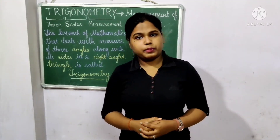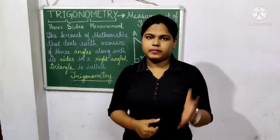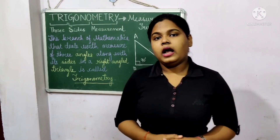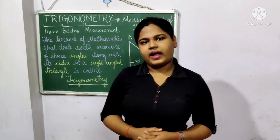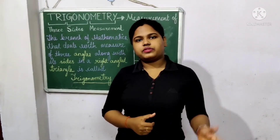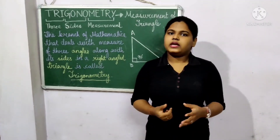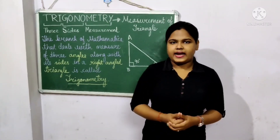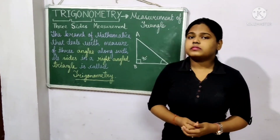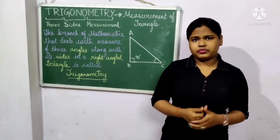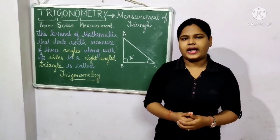So what does trigonometry basically mean? Trigonometry means measurement of triangle. The word trigonometry is divided into parts: tri means three, gono means sides, and metri means measurement. Three sides basically refer to a triangle.